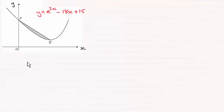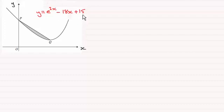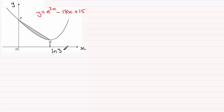For this question, we're asked to find the shaded area between the curve y equals e to the power 2x minus 18x plus 15 and the line PQ. Remember in the previous part, we showed that point Q, which was a minimum point on the curve, had an x-coordinate of natural log 3. So that point projected down would have an x-coordinate of natural log 3. So how are we going to go about finding this shaded area?